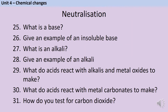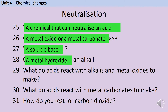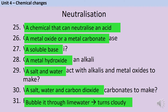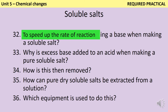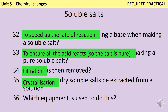A base is a chemical that can neutralise an acid, such as a metal oxide or a metal carbonate. An alkali is a soluble base, such as a metal hydroxide. When acids react with alkalis or with metal oxides, they make a salt and water. When acids react with metal carbonates, they make a salt, water, and carbon dioxide. To prove that a gas is carbon dioxide, you can bubble it through lime water, which will turn cloudy. In the required practical, the acid is heated to increase the rate of reaction. Excess base is added to ensure all of the acid reacts, making acid the limiting reactant. The excess base is then removed by filtration, and the pure dry soluble salt is extracted from the solution by crystallisation — placing it in an evaporating basin and heating it using a hot water bath or a Bunsen burner.